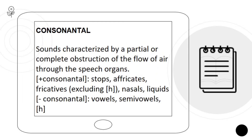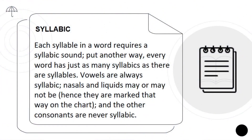Consonantal: sounds characterized by a partial or complete obstruction of the airflow through the speech organs. Syllabic: each syllable in a word requires a syllabic sound. Put another way, every word has just as many syllabics as there are syllables. Vowels are always syllabic. Nasals and liquids may or may not be — hence, they are marked that way on the chart which will be shown later. The other consonants are never syllabic.